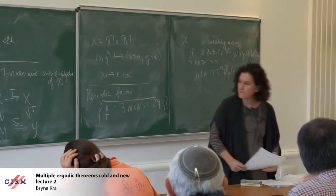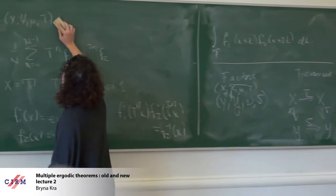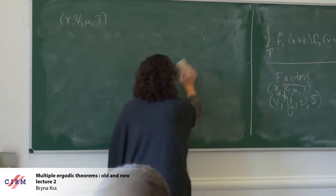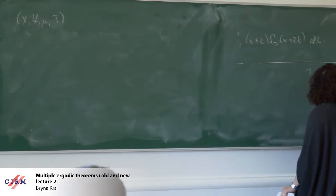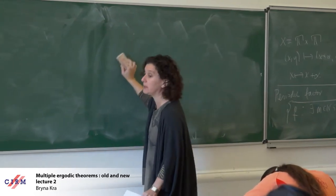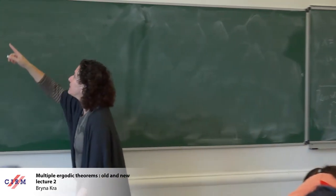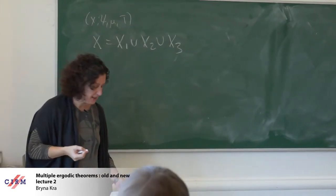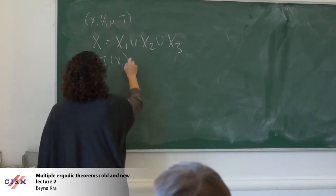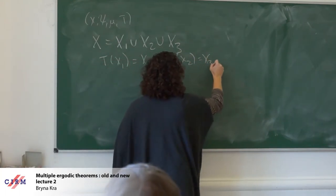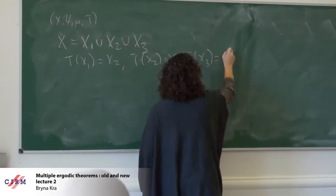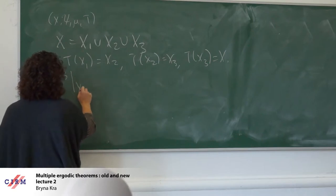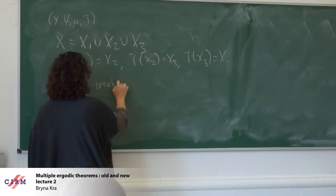I've already said if you have a rotation, what the double averages do. But let me give you an explicit example of what happens to these double averages if my system has some rotational behavior and I'm able to actually compute the averages. Let's say my system splits into having some rotational behavior by three: rotation into three pieces, so T(x1) = x2, T(x2) = x3, and T(x3) brings me back. So there's a three-rotation moving pieces around.